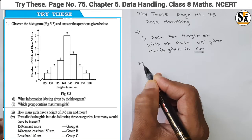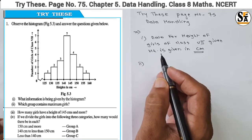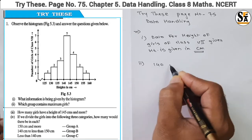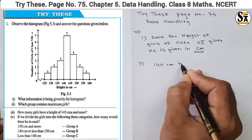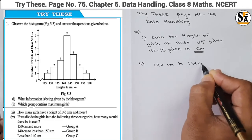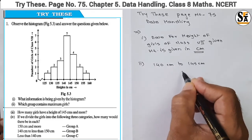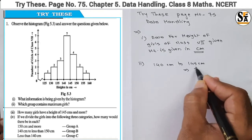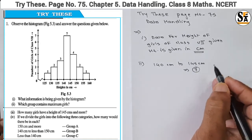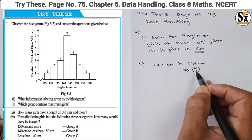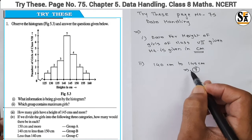The second question asks: which group contains the maximum number of girls? The group from 140 centimeters to 145 centimeters contains the maximum number of girls, and that number is seven. From the histogram it is very clear — this is the highest bar, representing the highest number of girls in that class interval.